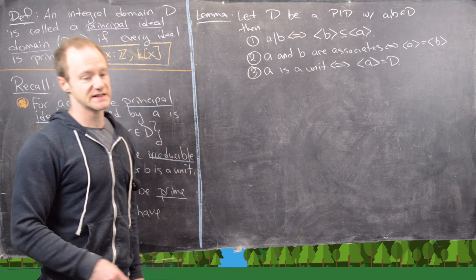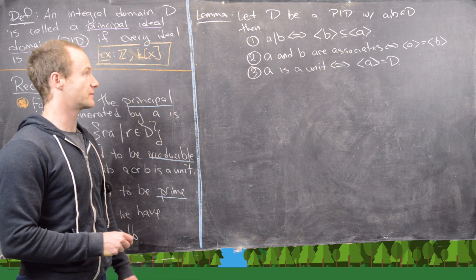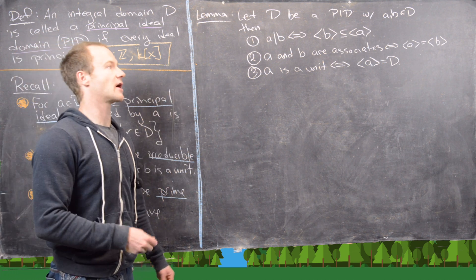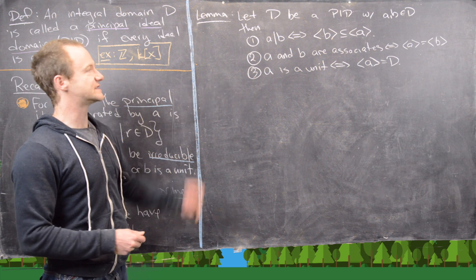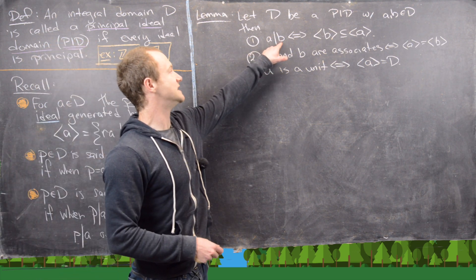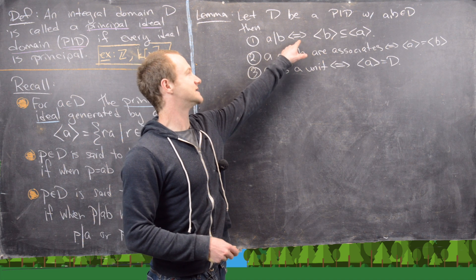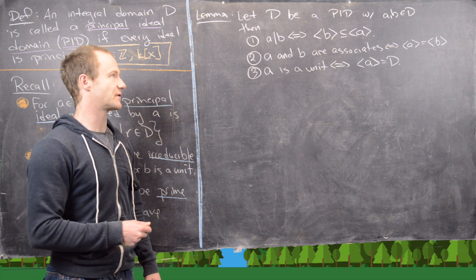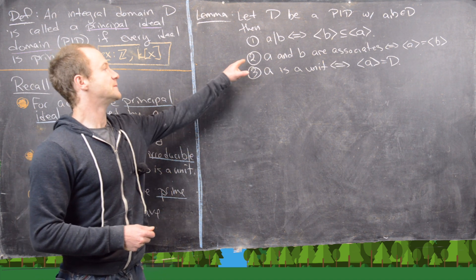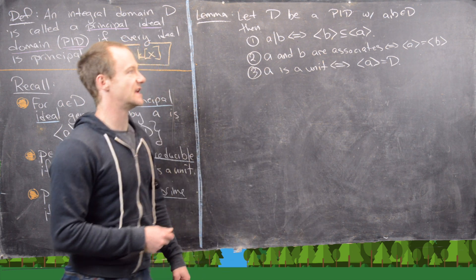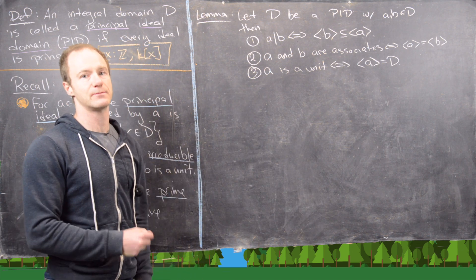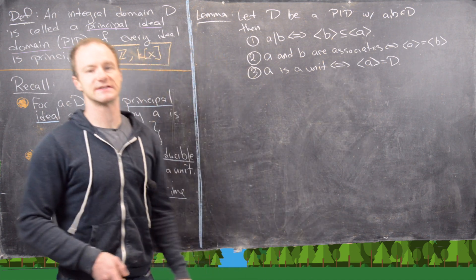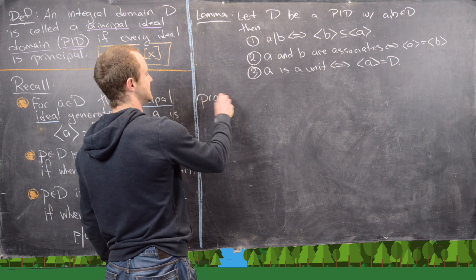We want to prove this lemma before we prove another result about PIDs. If D is a PID and A and B are elements of D, then we have three equivalences: A divides B if and only if the ideal ⟨B⟩ is a sub-ideal of ⟨A⟩; A and B are associates if and only if they generate the same principal ideal; and A is a unit if and only if the ideal generated by A is the whole ring.